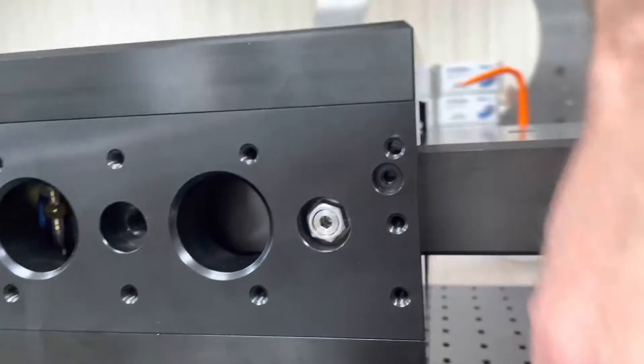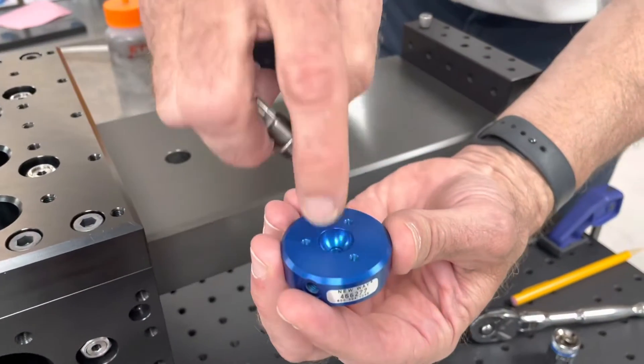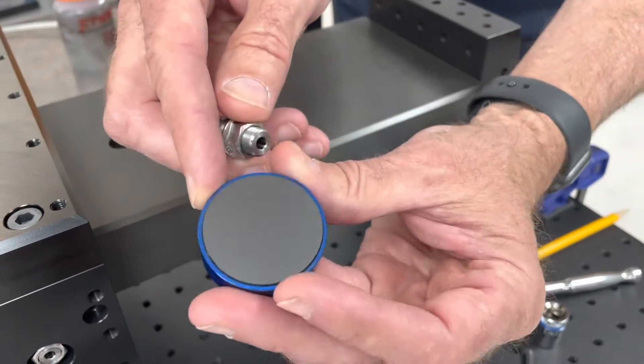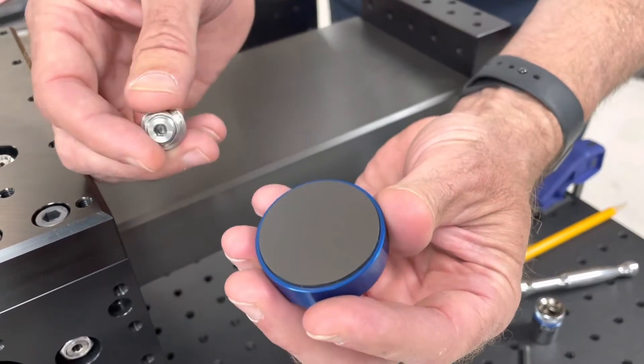So this is one of the bearings right here. You can see it has a spherical seat in the back, porous carbon face on the front.